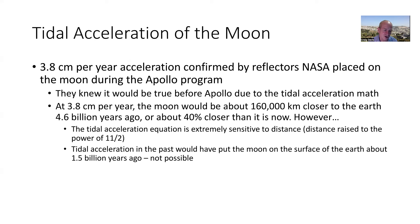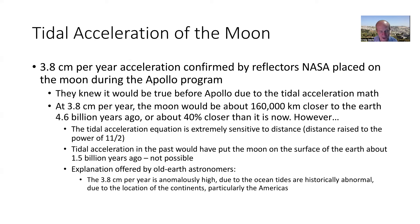This is not an argument for a really young creation in the 10,000-year range, nor even against a solar system that's 1 billion years old. However, it is an argument against a solar system that is 5 billion years old — it just doesn't work. Old solar system astronomers have an explanation: the current 3.8 cm/year rate is unusually high because ocean tides right now are historically abnormal due to the location of the continents, particularly in the Americas.